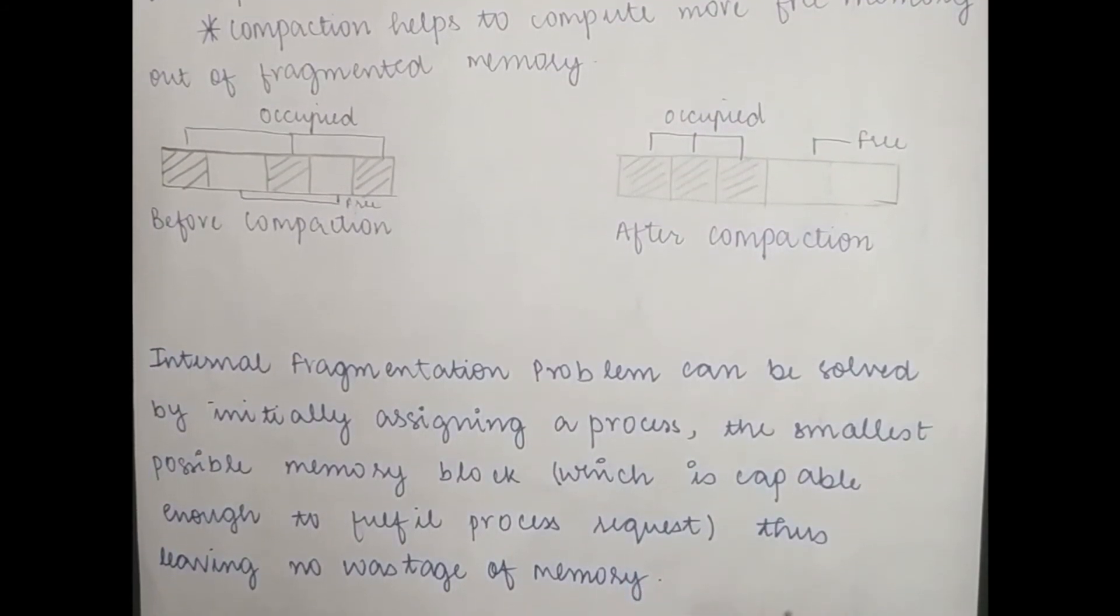Compaction means that as much vacant space as you have, you can convert it to a single unit so that it can be used in any other process. Suppose these two are vacant - we have converted them to a single unit so that it can be used in any other process.